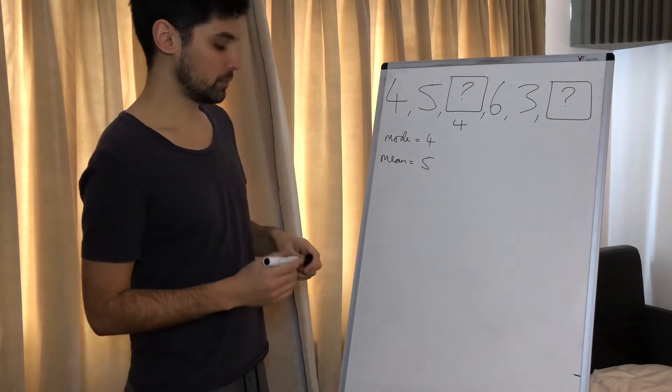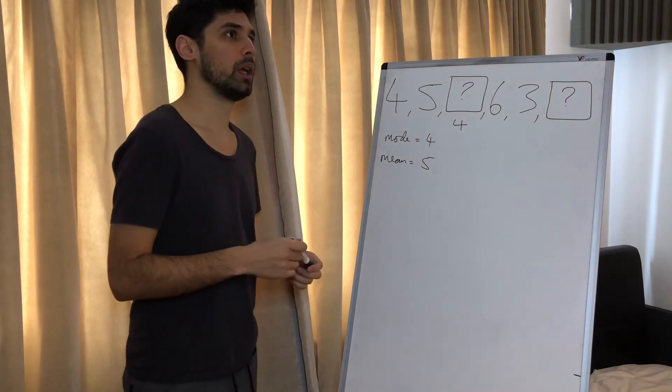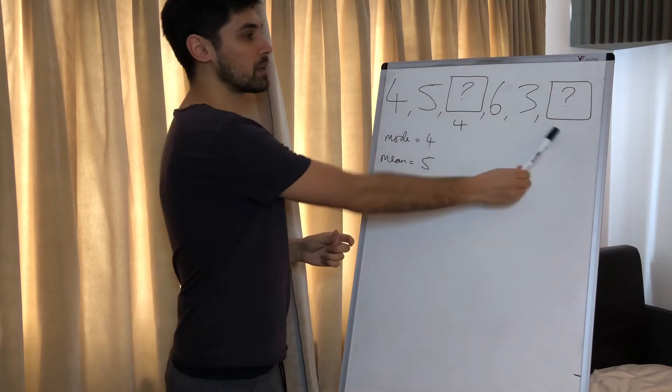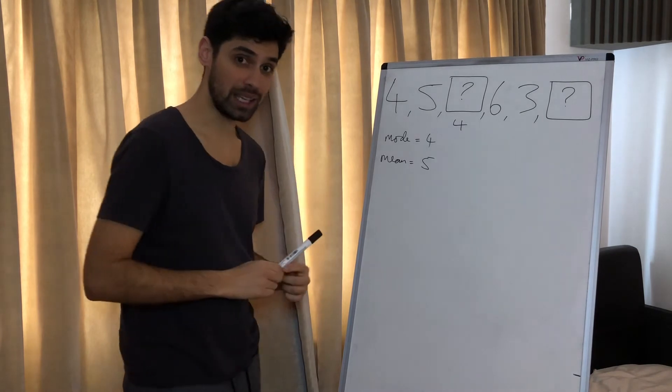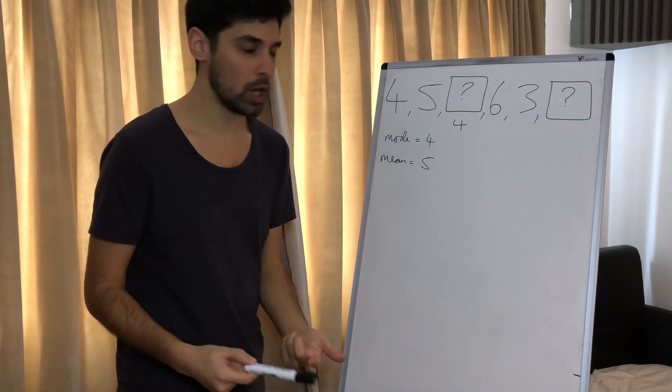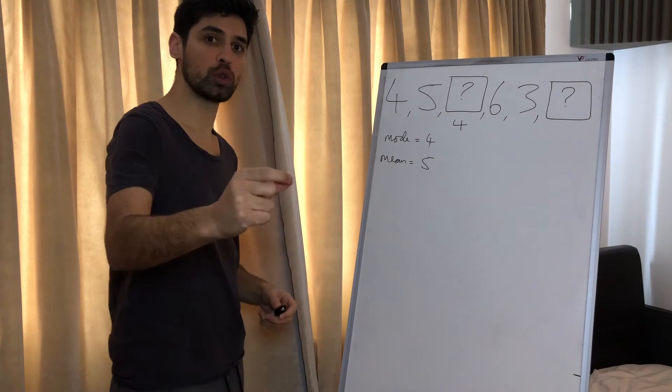We're told the mean is five. Now what does that mean? That means when we add all of these numbers together and divide by six, the answer is five.